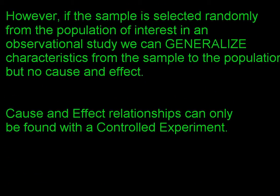However, if the sample is selected randomly from the population of interest in an observational study, we can generalize the characteristics from the sample to the population — but there is still no cause-and-effect. Generalizing means we can notice a relationship but can't say one thing caused another. So we might notice people who drink orange juice happen to have fewer headaches, and if we selected those people completely at random from the population we're interested in, we could say there seems to be a connection. But to do this generalizing, we must select subjects at random.